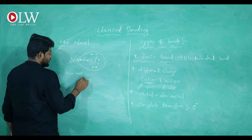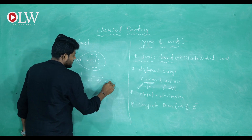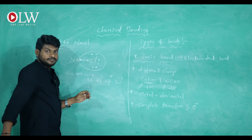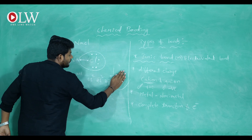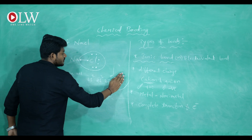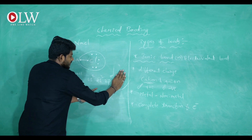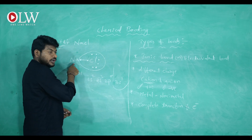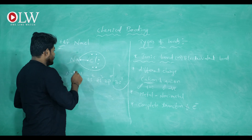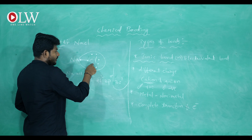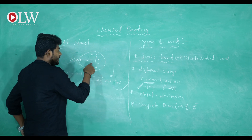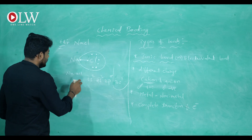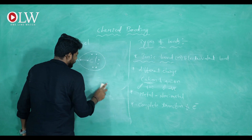Sodium has 11 electrons: 1s2, 2s2, 2p6, 3s1. That one outer electron — represented as a Lewis dot — is donated to chlorine. After donating, sodium's remaining configuration is 2s2 and 2p6. Counting those: two plus six equals eight electrons in its outermost shell. So by donating one electron, sodium also achieves eight electrons in its outer shell, following the octet rule. Both sodium and chlorine are now following the octet rule.